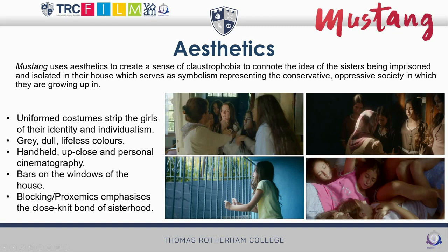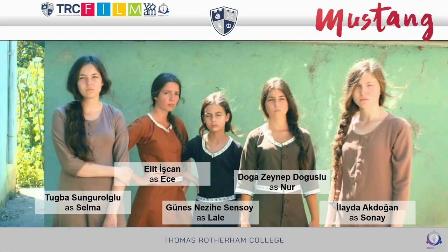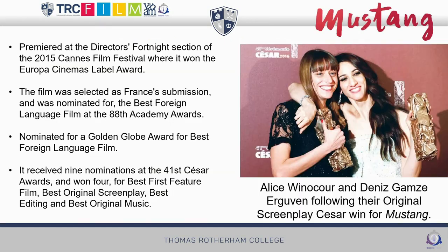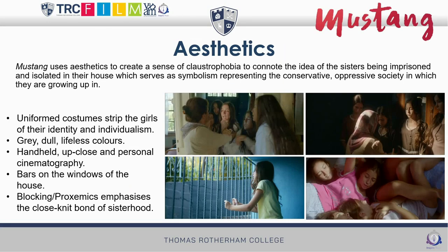Their house is very much seen as a prison for Turkish — or certainly rural Turkish — society. But there is also a lot of emphasis on the close bond the sisters share: you get tight proxemics where the sisters almost mould into one shape, a recurring technique to show how close they are. The poster is also quite an iconic shot — a low angle shot of the girls all in a circle looking down at the camera, emphasising that closeness.